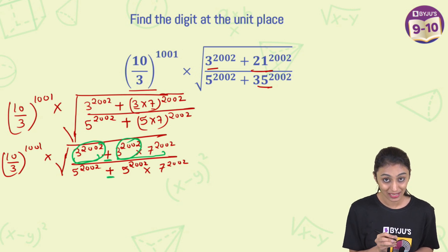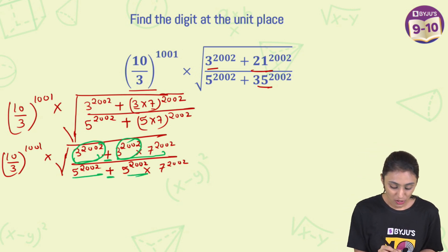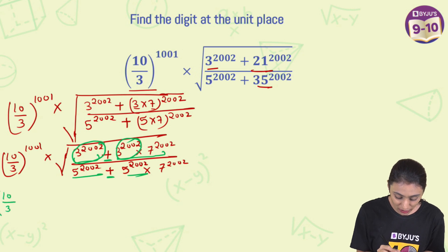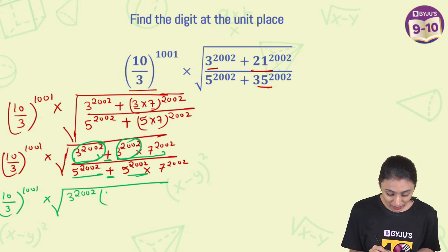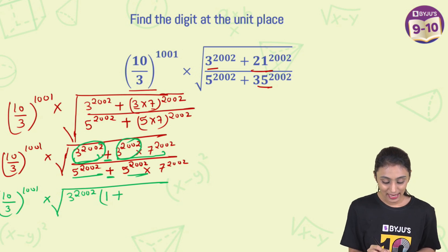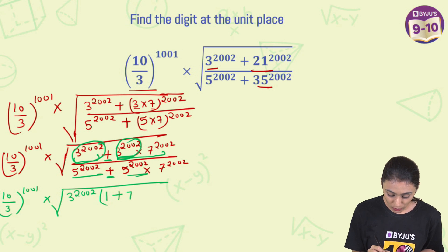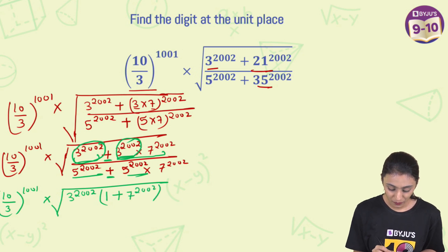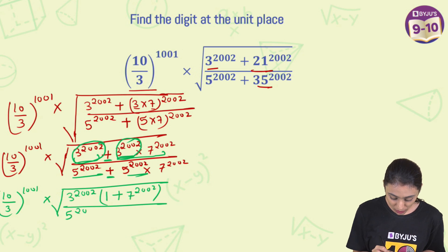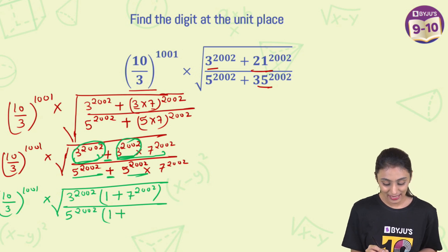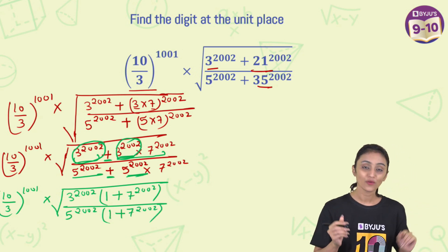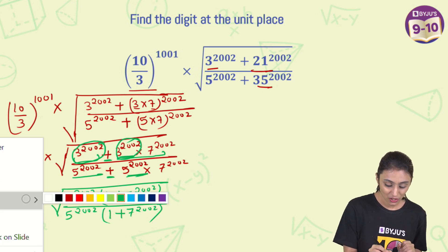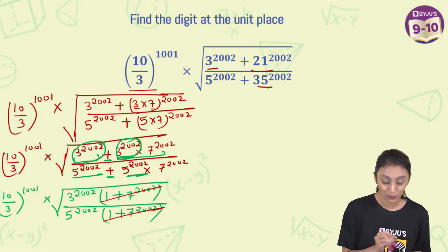In the denominator, similarly, there is a plus sign and 5 to the power 2002 is common in both terms. So we factor out: in the numerator, 3 to the power 2002 times (1 plus 7 to the power 2002), and in the denominator, 5 to the power 2002 times (1 plus 7 to the power 2002). The bracket (1 plus 7 to the power 2002) appears in both numerator and denominator, so it cancels out entirely.